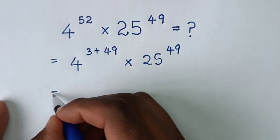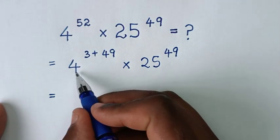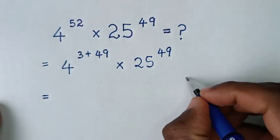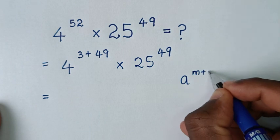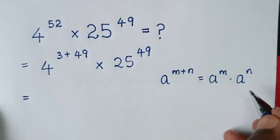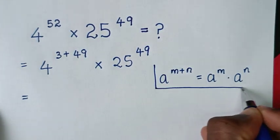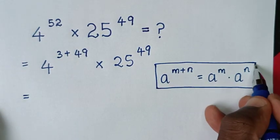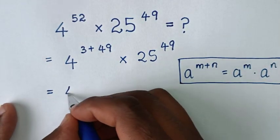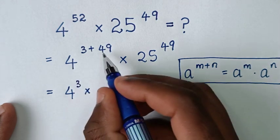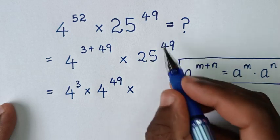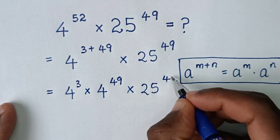Then in the next step, it will be equal to: 4 power of 3 plus 49. This is in the exponential form a power of m plus n, which is equal to a power of m times a power of n. So we'll apply this form here. It will be 4 power of 3, then times 4 power of 49, then times 25 power of 49.